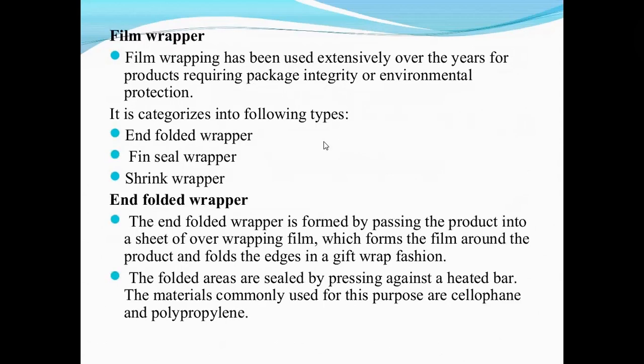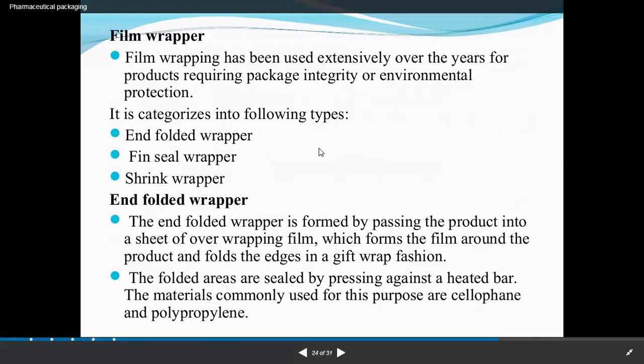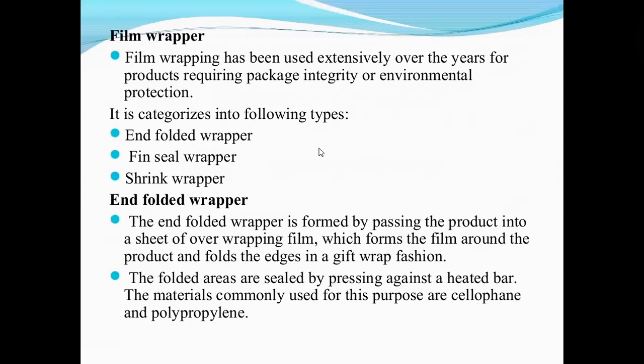Film wrapping has been used extensively over the years for products requiring packaging integrity or environmental protection. It is categorized into the following types: enfold wrapping, fin seal wrapping, and shrink wrapper. The enfold wrapper is formed by passing the product into a sheet of over-wrapping film.